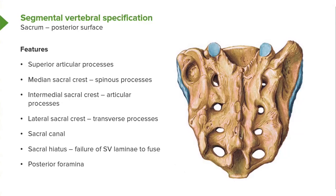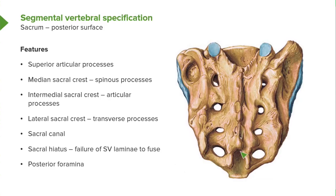Posteriorly, we see openings for branches of sacral spinal nerves — four posterior sacral foramina are visible. In the midline, the sacral canal results from the fusion of individual sacral vertebral foramina. At the inferior end, the laminae of S5 failed to fuse posteriorly, forming the sacral hiatus.